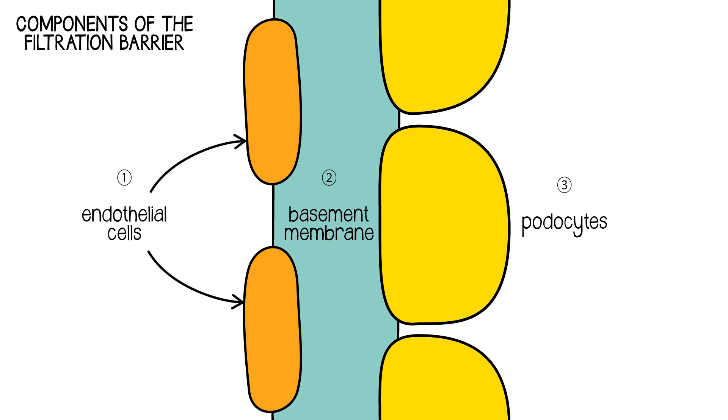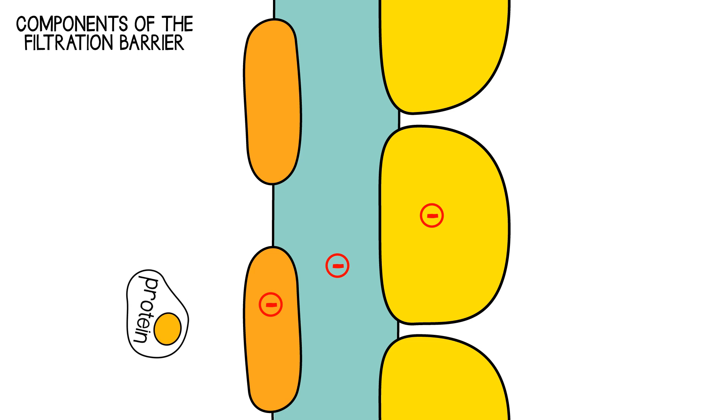In fact, it's not based entirely on size, it's also based on charge as well. And it turns out that all three layers of the barrier are negatively charged, and that helps to repel, in particular, plasma proteins, which tend to be negatively charged. And that means it's even more difficult for proteins to be filtered.